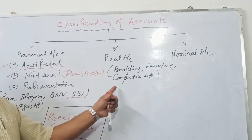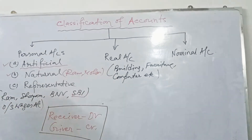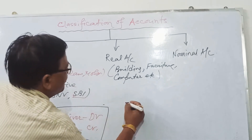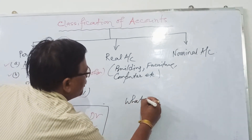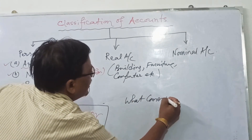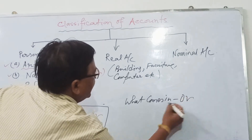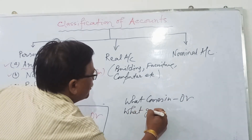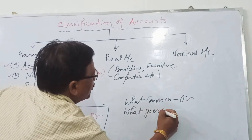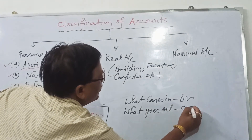All assets are related to real accounts — fixed assets, current assets, wasting assets, etc. The golden rules for real accounts: what comes in is debited and what goes out is credited.